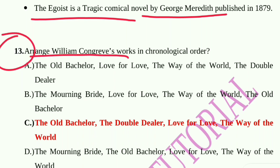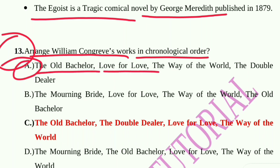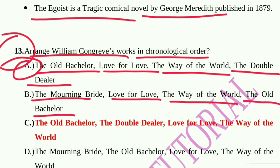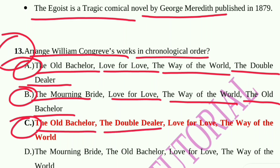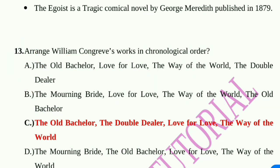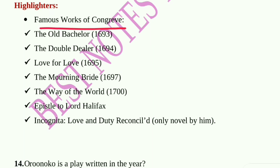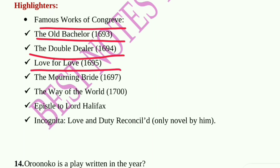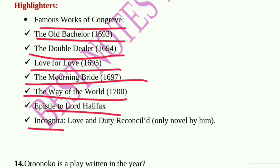Question number 13: Arrange William Congreve's works in chronological order. Option C is the correct answer: The Old Bachelor, The Double Dealer, Love for Love, The Way of the World. Publication dates: The Old Bachelor (1693), The Double Dealer (1694), Love for Love (1695), The Mourning Bride (1697), The Way of the World (1700). Other works include Incognita and Love and Duty Reconciled, his only novel.